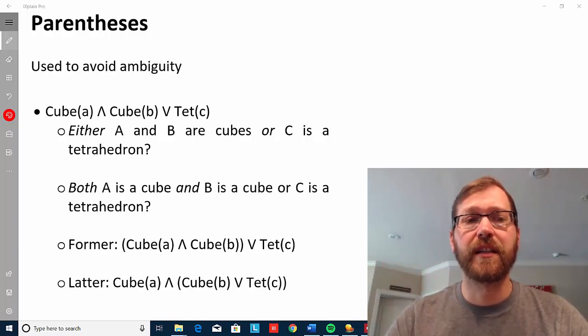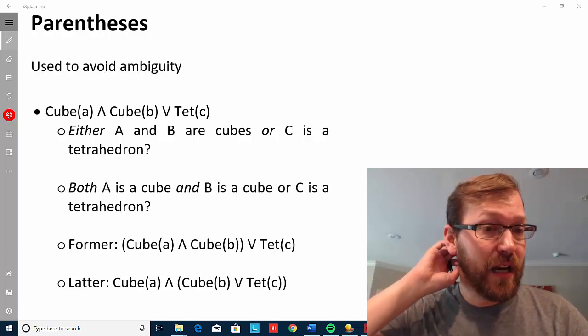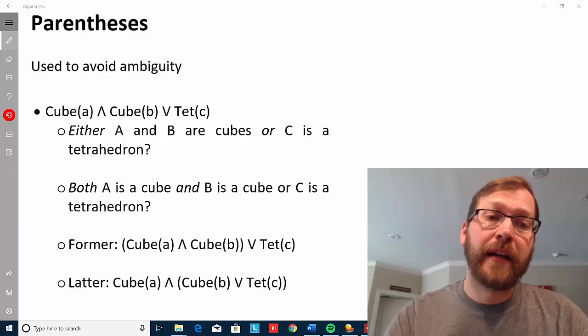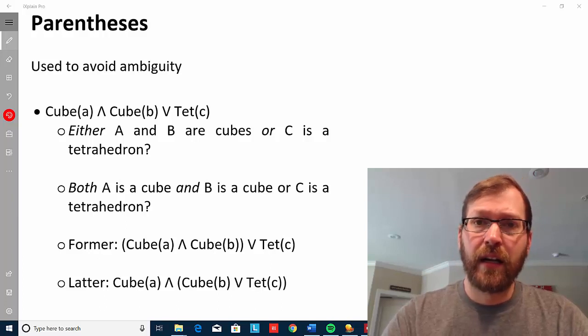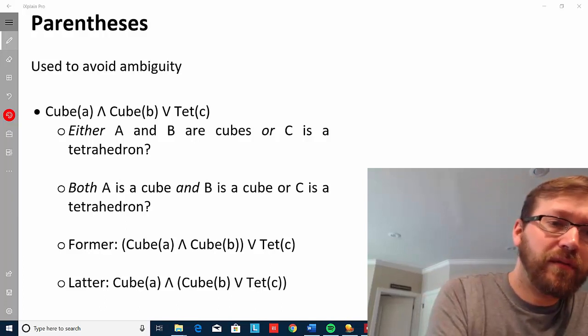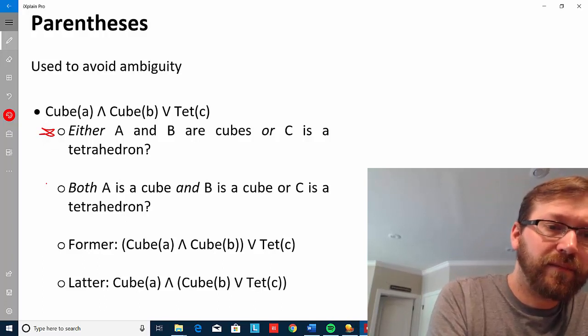So if we take this sentence here that says Cube(a) caret Cube(b) wedge Tet(c), that could be read in one of two ways, this way or this way.